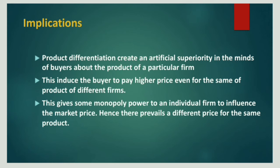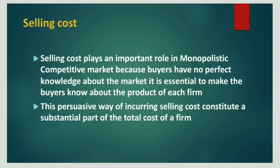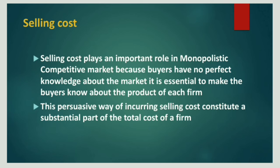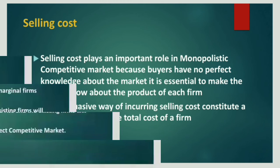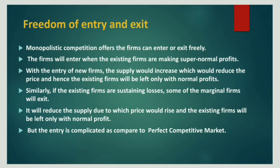Different prices for the same product allow an individual firm to influence the market price, because it gives some extent of market control. The selling cost plays an important role as a prominent feature of this competitive market, because buyers do not have perfect knowledge about the market. Every incurring cost can be charged as a supplementary part of the total cost of the firm. Price is not very much the deciding factor in competition like monopolistic; instead, the customer is attracted through advertisement and product quality.